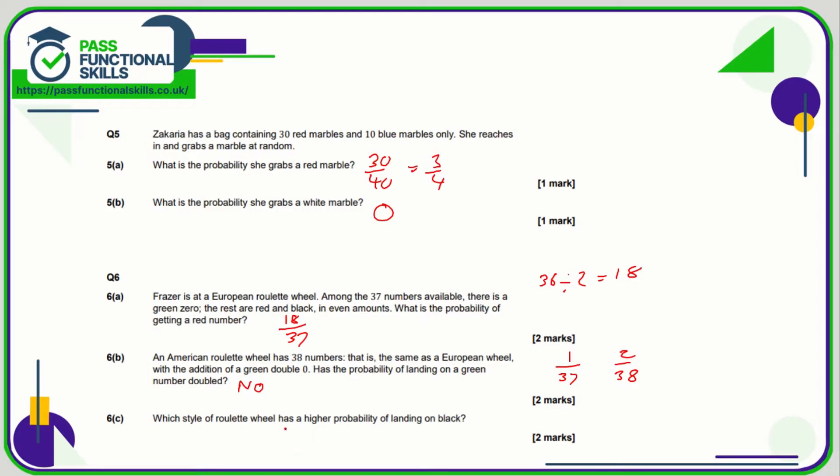So which style of roulette wheel has a higher probability of landing on black? Well, on the European, the probability of red is also the same as the probability of black. So European is going to be 18 out of 37.